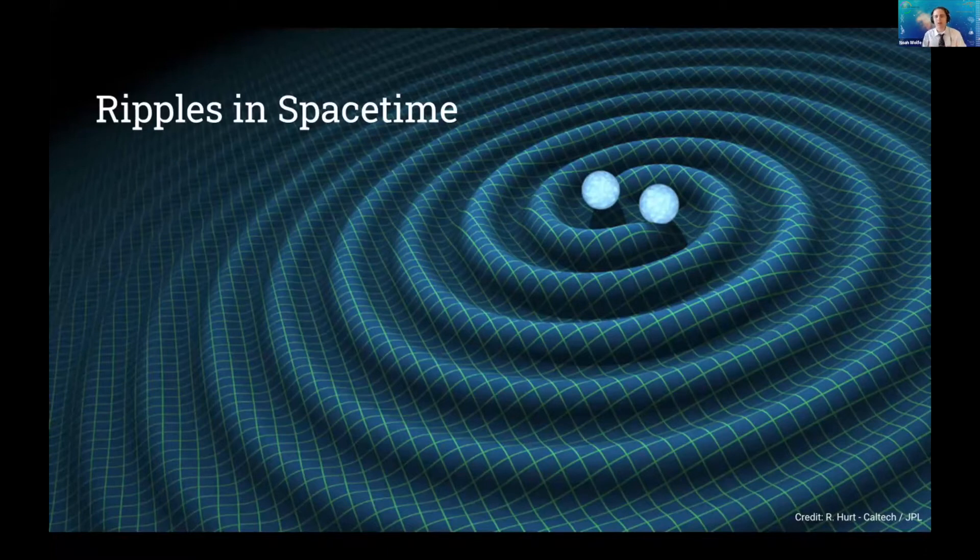The intensity and patterns of these ripples, of this stretching and squeezing, is actually determined by the property of the black holes or neutron stars that merged. And there's an added benefit that unlike light from a star, gravitational waves won't be blocked by material in between us and the source of the signal. And so these are really cool signals that we can use to probe these astrophysical laboratories.